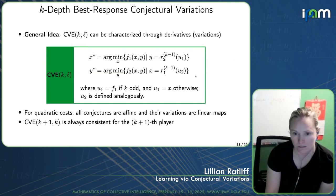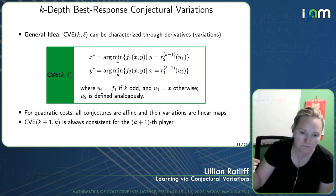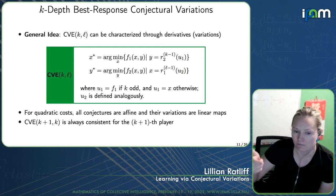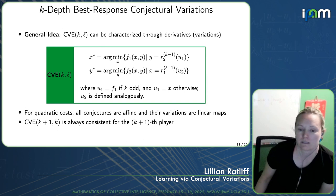In the case where costs are quadratic — which will be important for the experiments — all conjectures turn out to be affine functions, because they're derived from the first-order optimality conditions for each player's optimization problem. Taking the derivative of a quadratic function gives an affine function, and the variation of the conjecture — the derivative of the conjecture — is just a linear map. This means it's really easy to compute, and this holds no matter how many levels of conjecture or nestings of best responses you do.